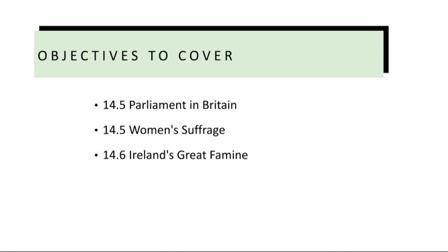We'll then move on to Ireland and explore a very dark chapter known as the Great Famine. In the mid-19th century, a devastating potato blight struck Ireland, wiping out the staple crop and triggering a humanitarian crisis. The Irish, heavily reliant on potatoes, faced widespread hunger and disease. This catastrophe was compounded by complex social and economic factors, including British colonial policies — the British had colonies in both the U.S. and Ireland, and the effect on the Irish was similar to that on the Americans. Millions emigrated, and sadly many lost their lives. The Great Famine had a profound impact on Irish history, shaping the nation's identity and its relationship with Britain.